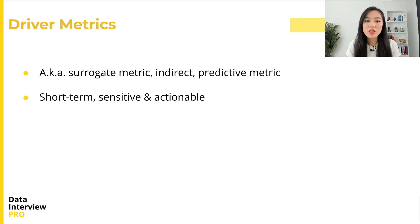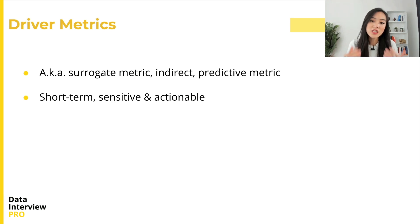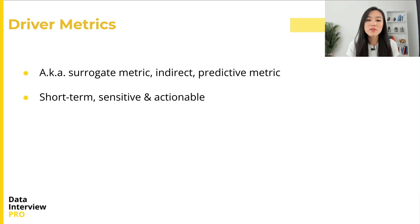Driver metrics, also known as surrogate metrics, are indirect or predictive metrics that are often used to measure short-term objectives. These metrics align with the goal of the company, are sensitive to short-term progress, and are actionable so that teams can be driven to work toward them. In a nutshell, driver metrics are the major metrics used for A/B testing.